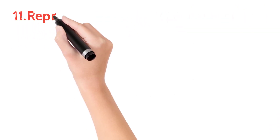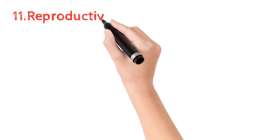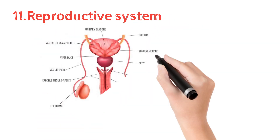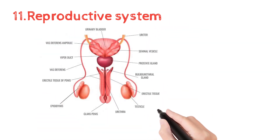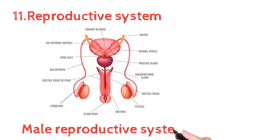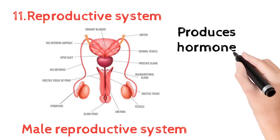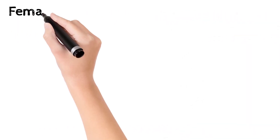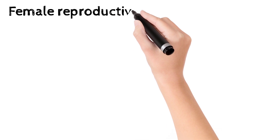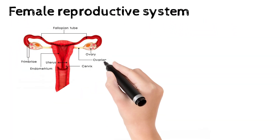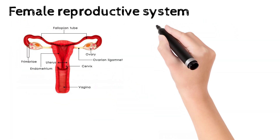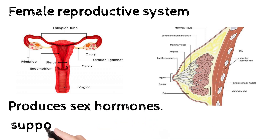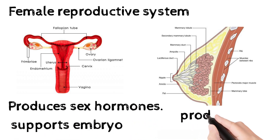The reproductive system includes male and female systems. Both produce hormones and gametes — for example, testes in males. In females, the system produces milk from the mammary glands and supports the embryo or fetus until birth. An example organ is the uterus.